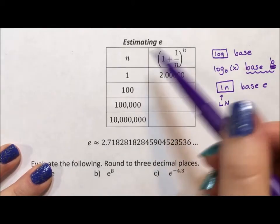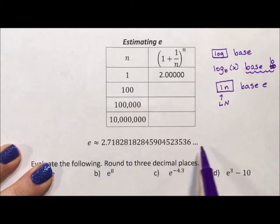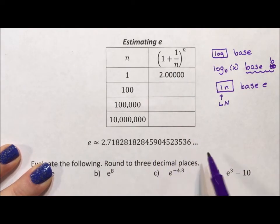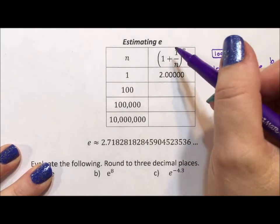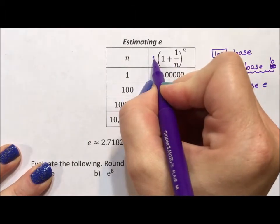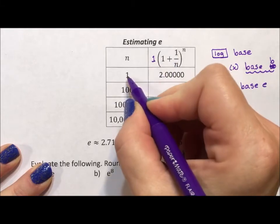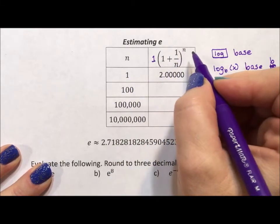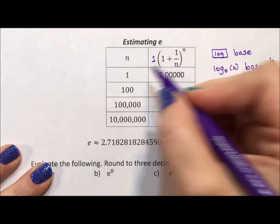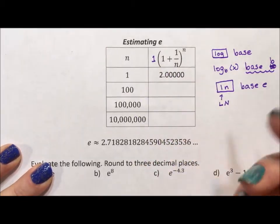So first I want to talk about how to estimate e. I have it down here what you get if you plug it into your calculator. But if we use the finance equation where you invest $1 at 100% one time a year, so 100% interest accrued once, you get $2. 100% is doubling.